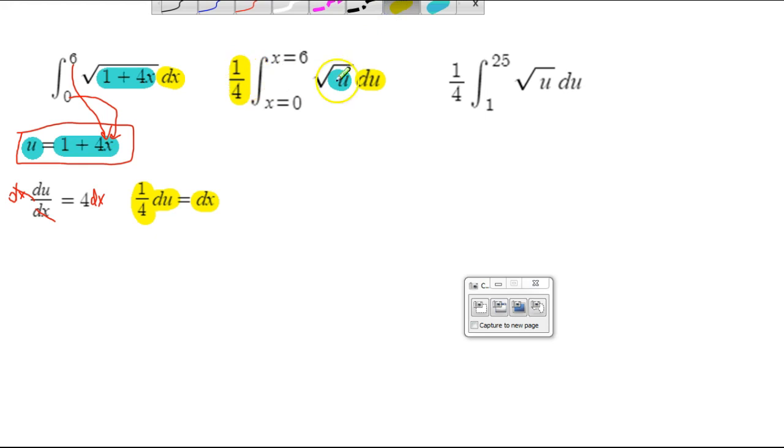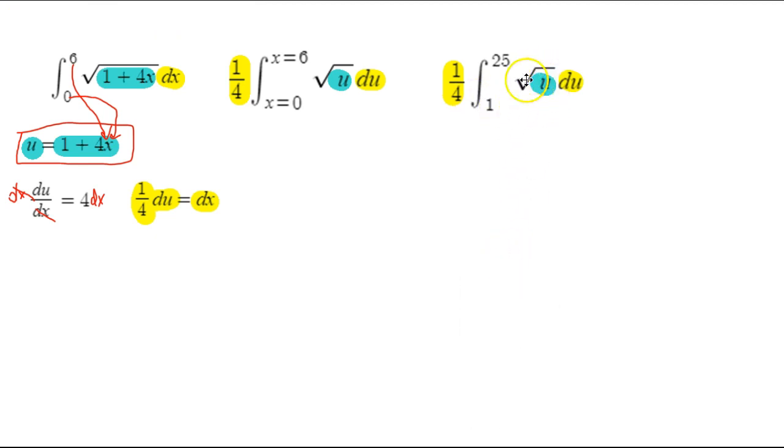All right. And now, everything's changed. So we've got the 1 fourth du, which is the same thing as dx. We've got the u underneath the radical, which is the same thing as the old thing underneath the radical, 1 plus 4x. And now, my lower and upper limits of integration, when x is 0, I get 1 plus 4 times 0, which is 1. When x is 6, 1 plus 4 times 6 is 24 plus 1 is 25. So this is what the new integrand becomes. Now, the other thing you want to do here, more than likely, is to change this from the square root to u to the 1 half. Use that property of roots becoming exponents.